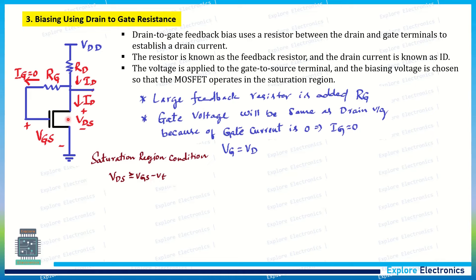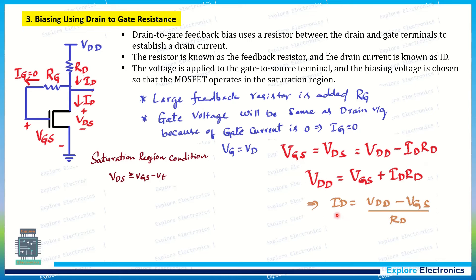By this biasing method, the transistor always operates in the saturation region. Since VD and VG are the same, we can write VGS = VDS = VDD − ID·RD. Using this expression, we can calculate the DC biasing current: ID = (VDD − VGS) / RD. This is the DC biasing current flowing through the transistor when it operates in amplifier mode.